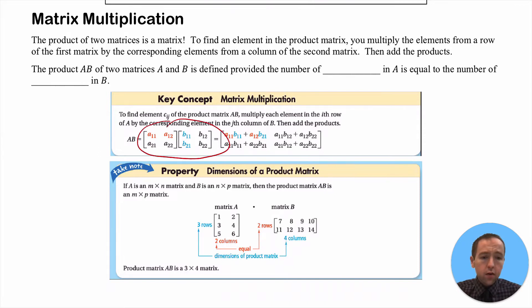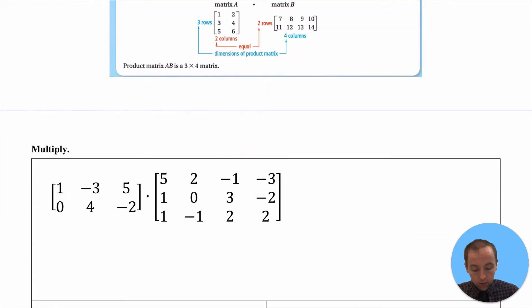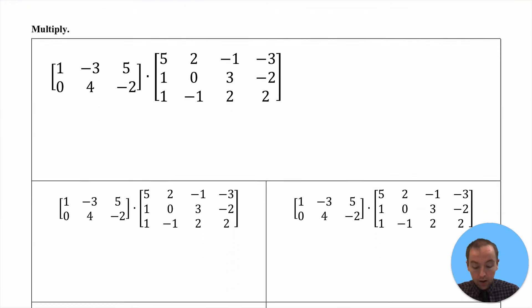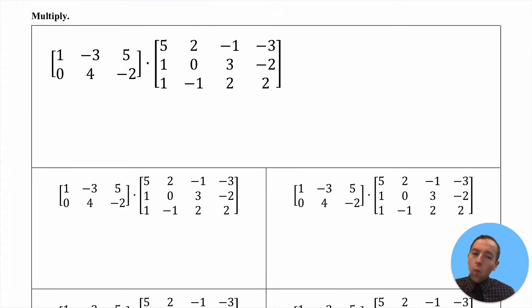It's best if we just work our way through how to do matrix multiplication first and then cycle back and talk about why it works as it does. So just bear with things as we go through the process, and then you'll understand once we get to the end why matrix multiplication actually works as it does.